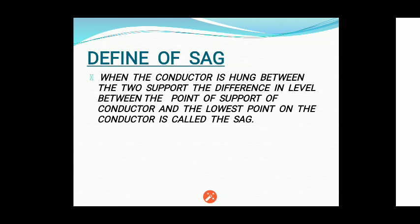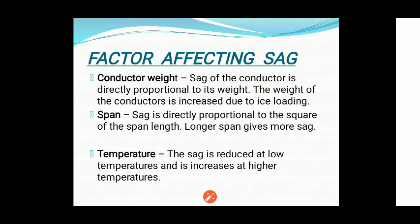Next we will discuss the factors that affect sag. The first factor is conductor weight — sag is directly proportional to the weight of the conductor, meaning if the weight of the conductor is more, then sag is more. The second factor is span — sag is directly proportional to the square of the span length. A longer span gives more sag.